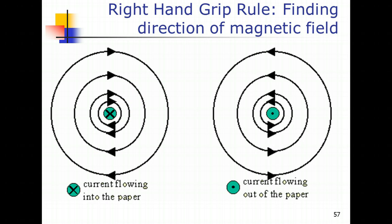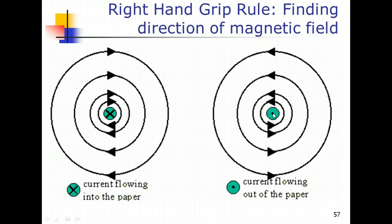In a typical worksheet, we need to use some symbols to represent current. If you look at a worksheet, it is just a flat piece of paper, so how do we indicate current flowing perpendicular to the plane of the paper? We use two symbols: a circle with a cross suggests that electrical current is flowing into the paper, whereas a circle with a dot suggests current flowing out of the paper. By using our right-hand grip rule, we will be able to determine the direction of the magnetic field lines.